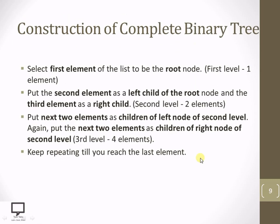Now we will see how to construct a complete binary tree. Whenever we construct a complete binary tree, we take the first element as the root node at level 1. The second element becomes the left child of the root node, and the third element becomes the right child of the root node, completing level 2. For the next elements, we start with the children of the left node from the previous level, then the children of the right node, completing level 3 and so on.